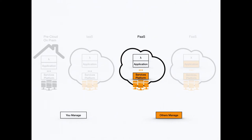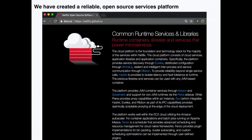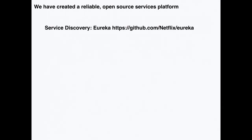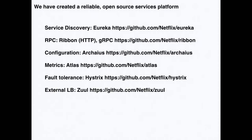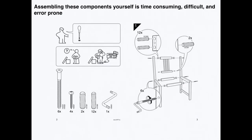To run an application at Netflix, we created our own reliable, open-source services platform. It provides all the components you need to run a reliable service: things like service discovery, RPC, configuration, metrics, and more — all open source. But sometimes I get asked why build Function as a Service if you already have this robust platform. It's kind of like going to IKEA and seeing a great chair — you bring it home and it comes in a palette of parts you have to assemble yourself.